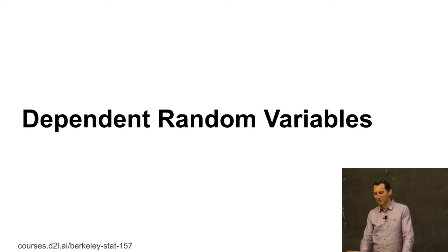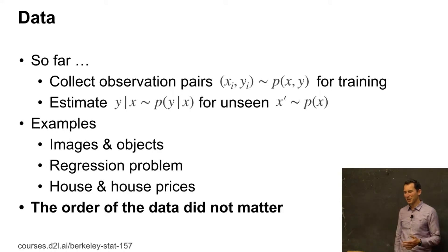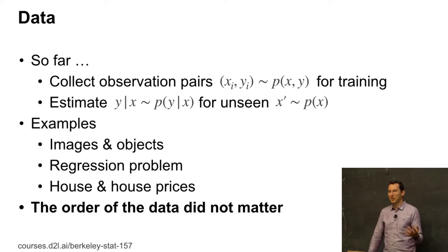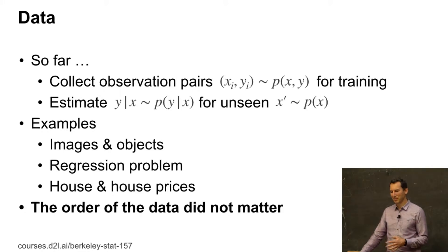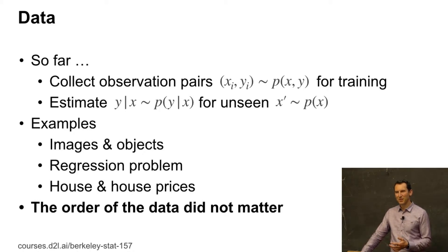Dependent random variables. What we did so far is we collected some observation pairs (XI, YI) from some joint distribution P of X and Y. Then we'd go off and estimate Y given X — maybe from some P of Y given X for some unseen X prime. We had images and objects, regression problems, house prices, and the order of the data didn't really matter.